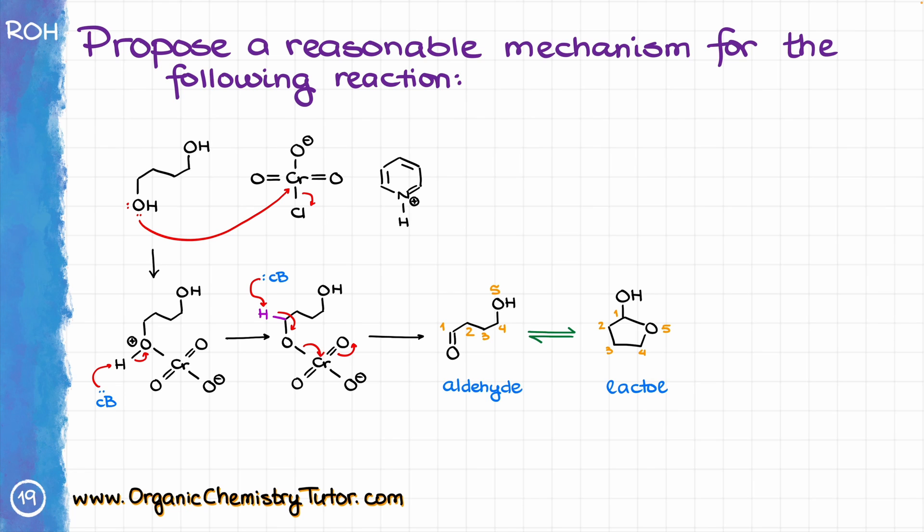And here is the fun part though. We have just reformed the OH over here, which can then undergo the second round of the oxidation, giving us our cyclic ester, which is called gamma-butyrolactone, and that is going to be our final product.